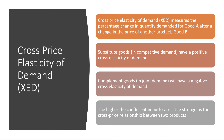Cross price elasticity of demand measures how responsive demand for one good is to a change in the price of another product. There are two types of products to consider. For substitute goods — goods in competitive demand, such as different makes of smartphone or choice of food retailer — the cross price elasticity of demand is positive. If the price of good X goes up, demand for the substitute good Y goes up.